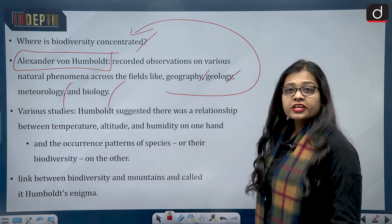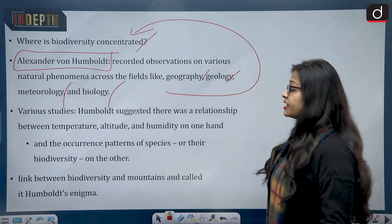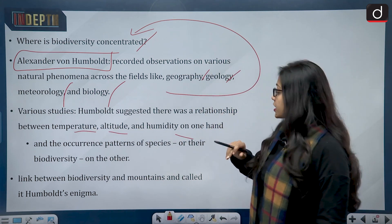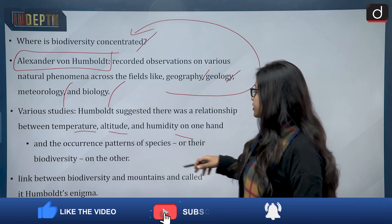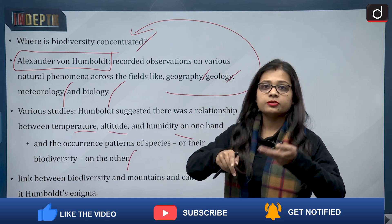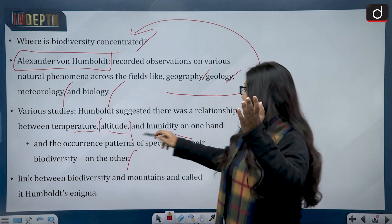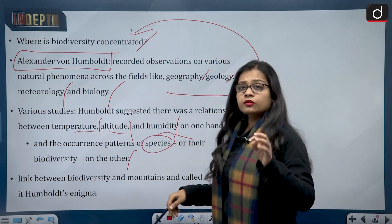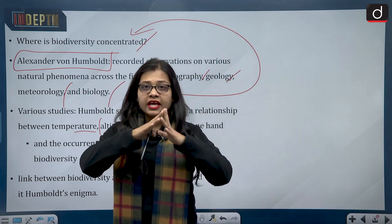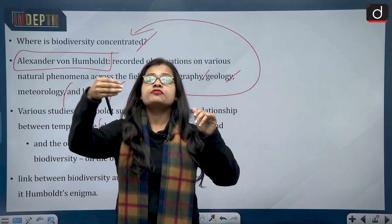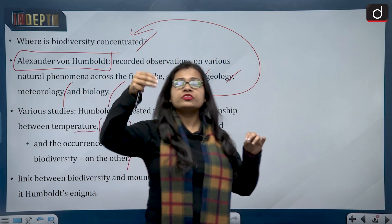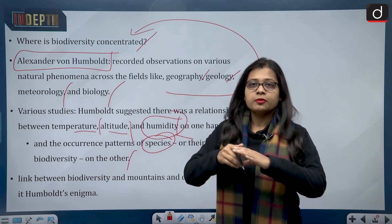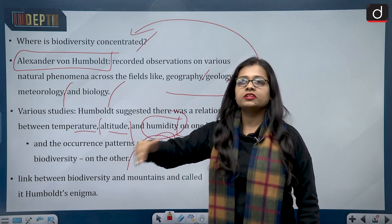Through his various studies, Humboldt suggested that there was a relationship between temperature, altitude, and humidity on one hand, and the occurrence patterns of species — their biodiversity — on the other. He said that at every altitude there is a difference in species, and that the moment altitude, temperature, or humidity changes, things cannot be the same.